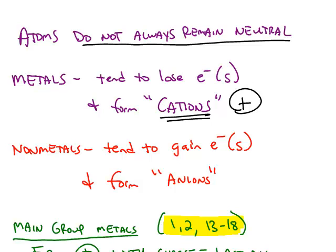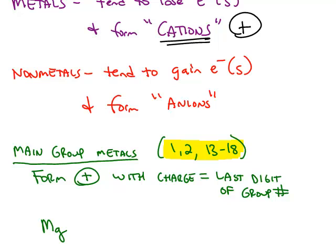The opposite happens for nonmetals. They tend to gain electrons, at least one, maybe more. When they form a negatively charged ion, because they have extra electrons, more electrons than positive protons, we call them anions.